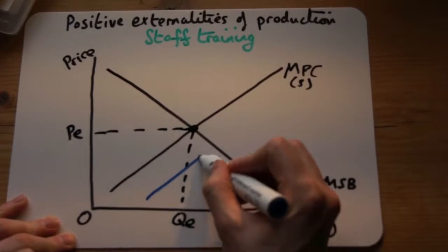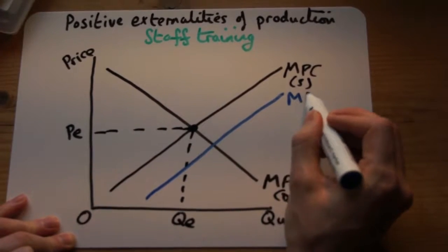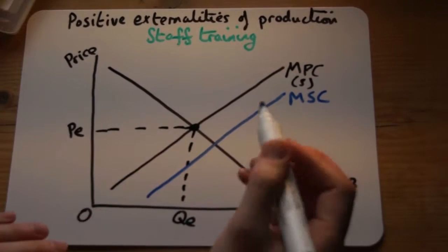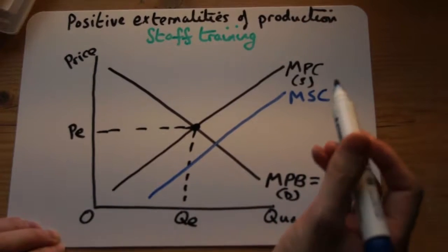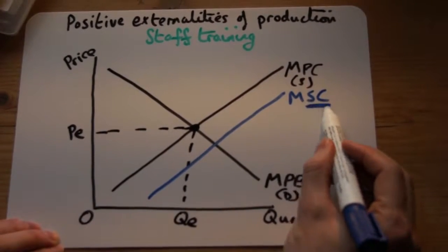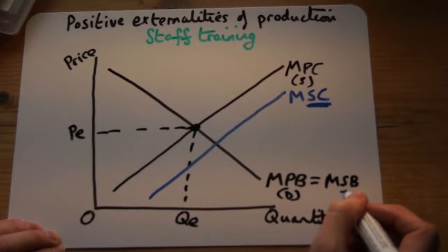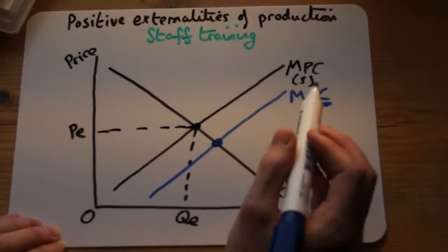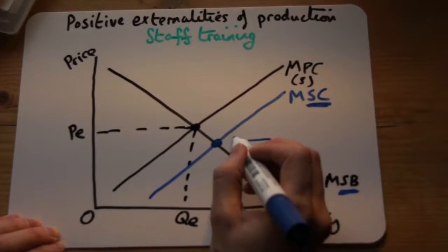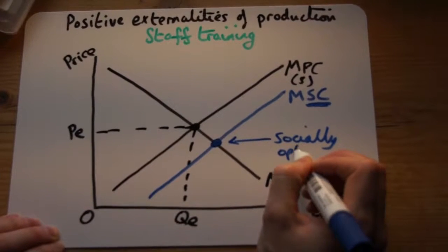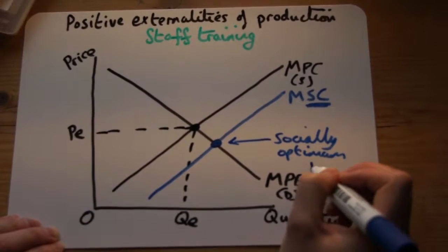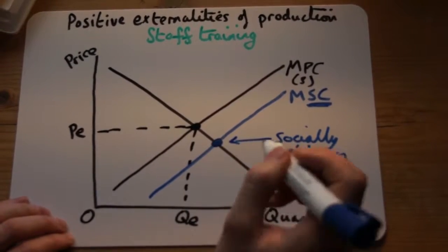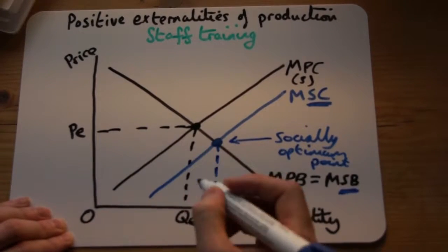The new supply line should be to the right, so we draw a marginal social cost line to the right. We then need to find the socially optimum point — where the social cost to society and to the business equals the social benefits to society from staff training. The socially optimum point is where social cost equals social benefits, which is the point at which we would produce and consume staff training if we were taking into consideration the benefits of such training.